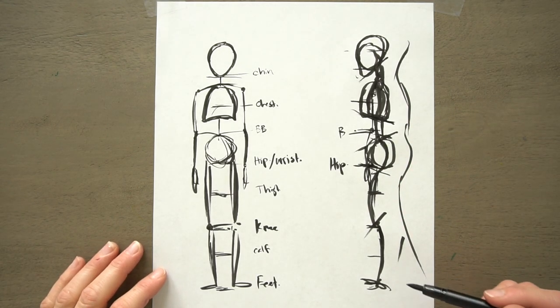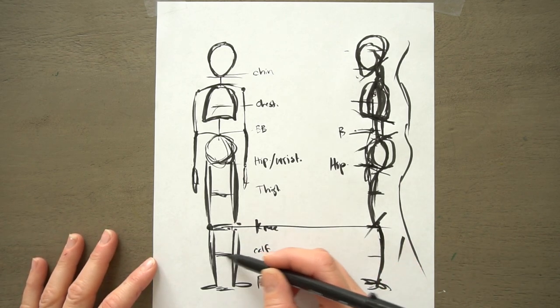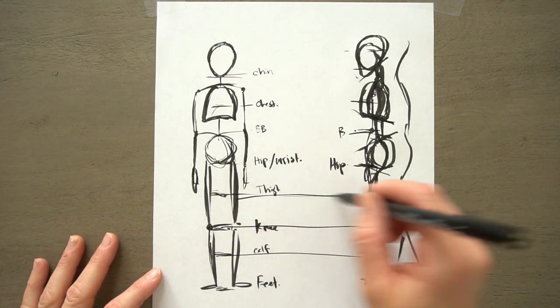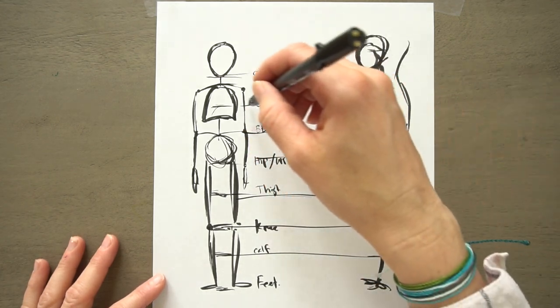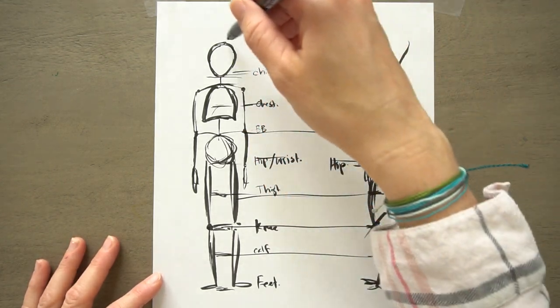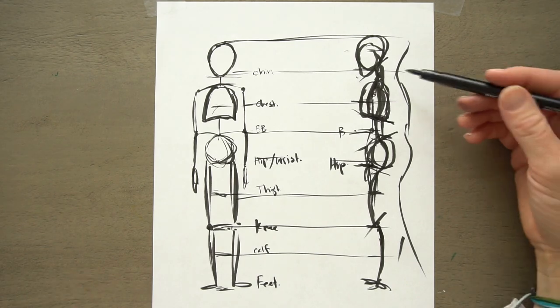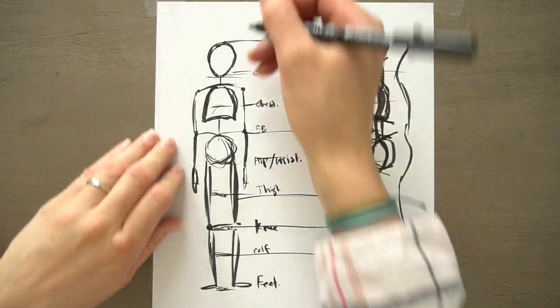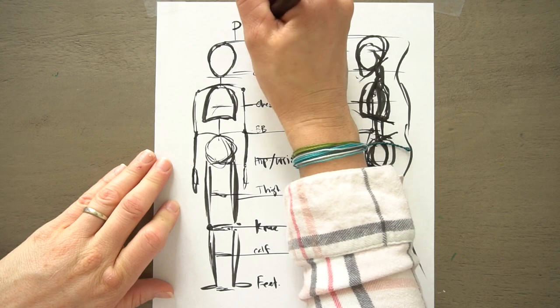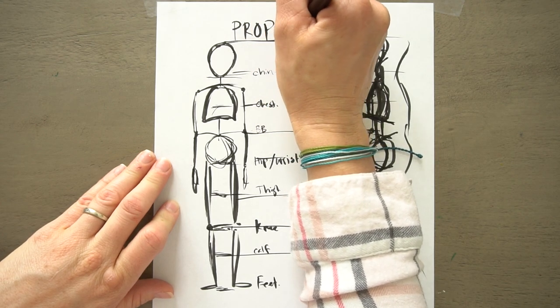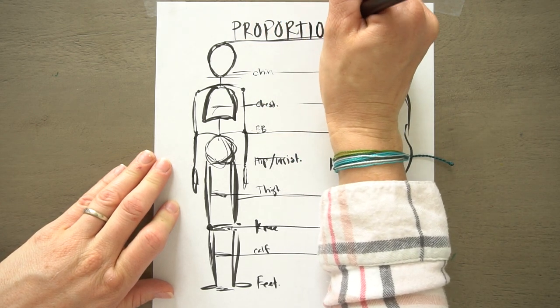So there we have the proportions of the figure. We have our knee, our calf, our thighs, the hips, the belly button, the middle of your chest, your chin. This is just kind of the top of your head. So these are the basic proportions of the figure. I'm just going to put proportions.